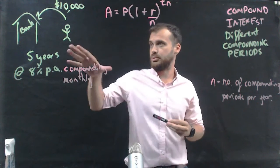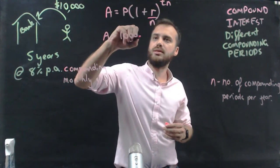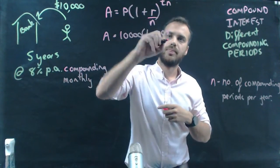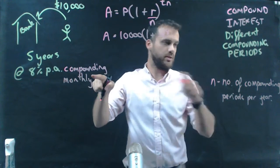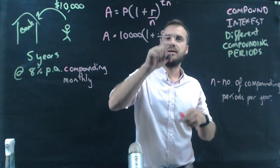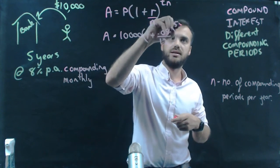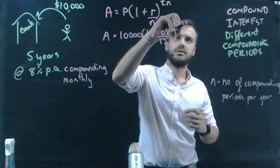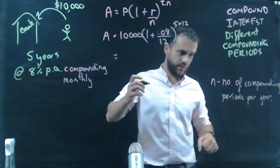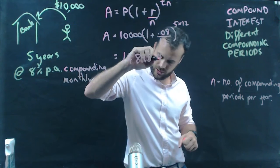Let's use our formula with actual numbers. A equals P, the amount we put in the bank, 10,000, times 1 plus the interest rate as a decimal, 0.08, divided by N, which is 12 for monthly compounding, to the power of time, 5 years, times N, 12. Putting this in the calculator gives us $14,898.46.